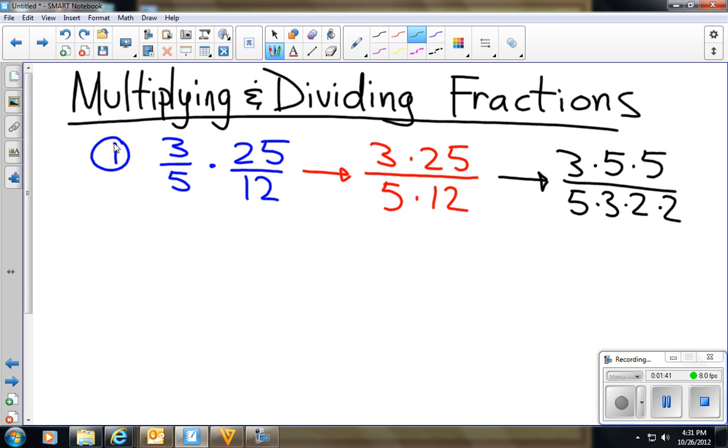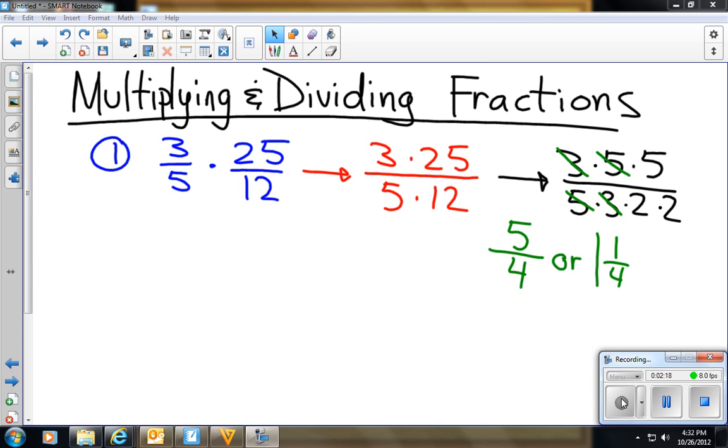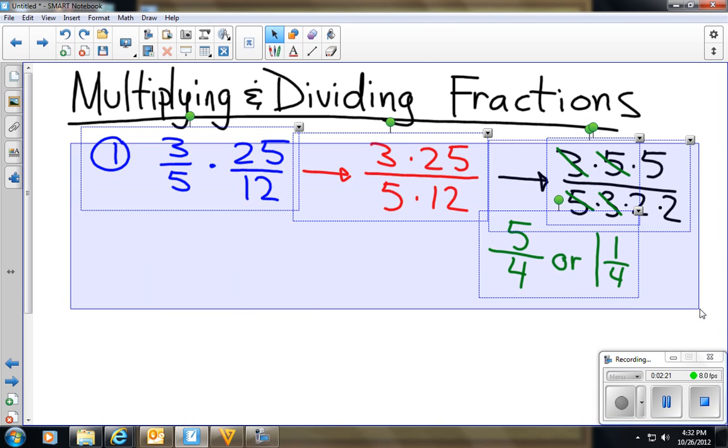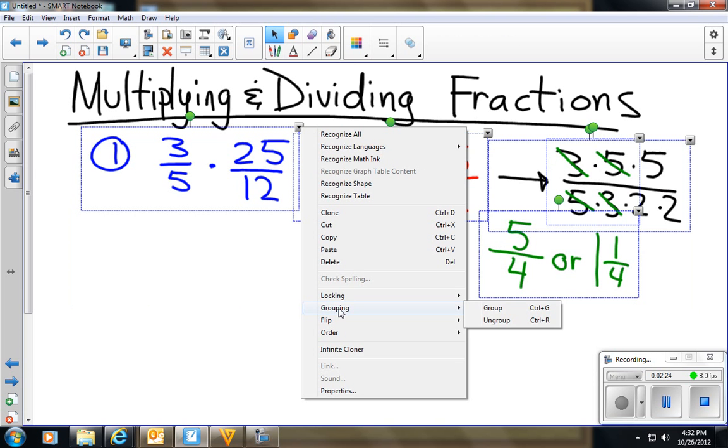And so what we would end up doing is we could cross out common factors. The 3's would cross out. The 5's would cross out. We would be left with a 5 on top, and then 2 times 2 on the bottom, which is 5/4, or simply stated as 1 and 1/4. So what does this mean? It means that we're basically multiplying the numerators up top, multiplying the denominators on bottom, and we are going to cross out any factors before we multiply to make it easy. And if we don't catch all of the factors in the very beginning, we will have an opportunity to simplify the answer at the very end. So hopefully that made a little bit of sense to you.